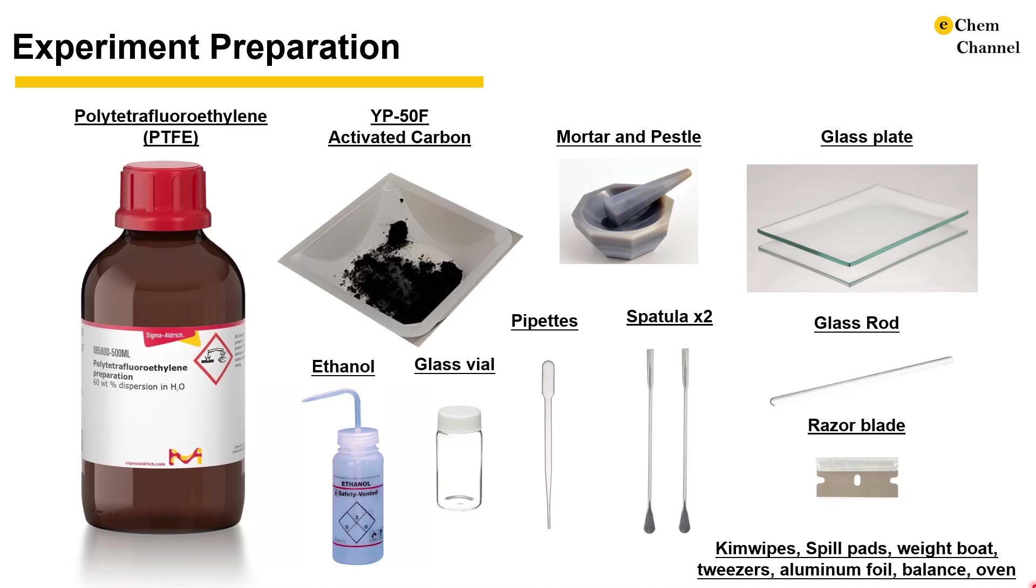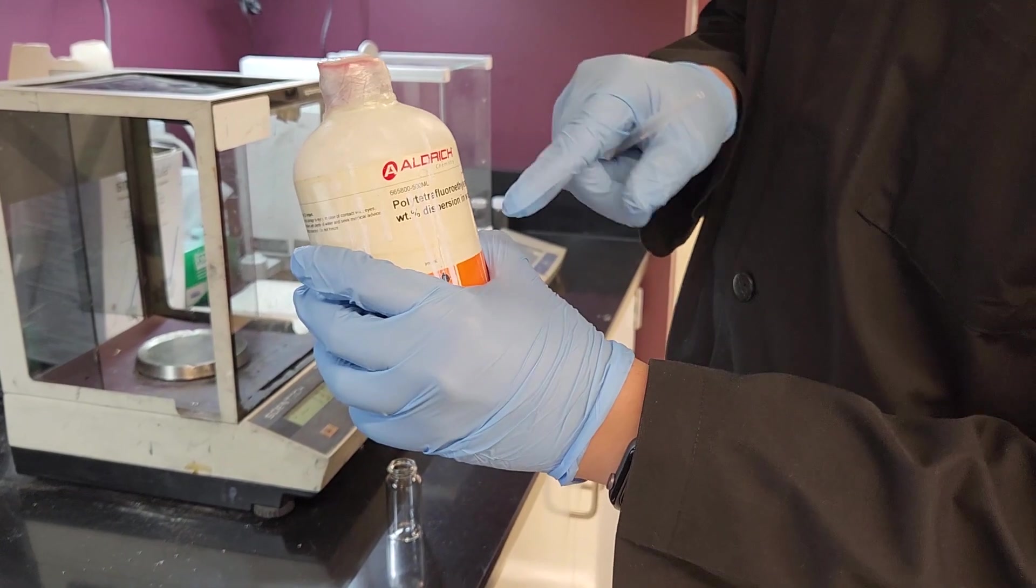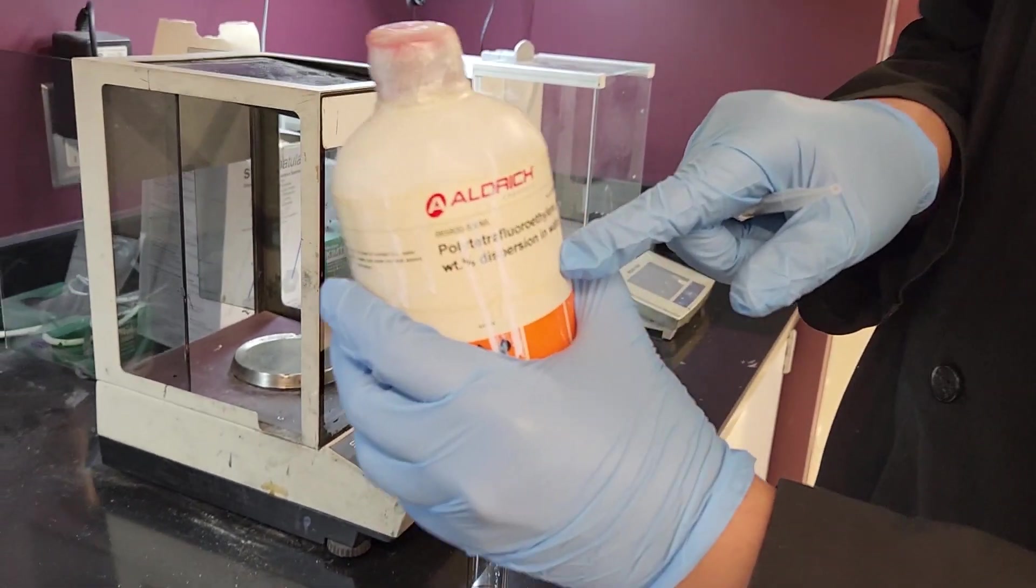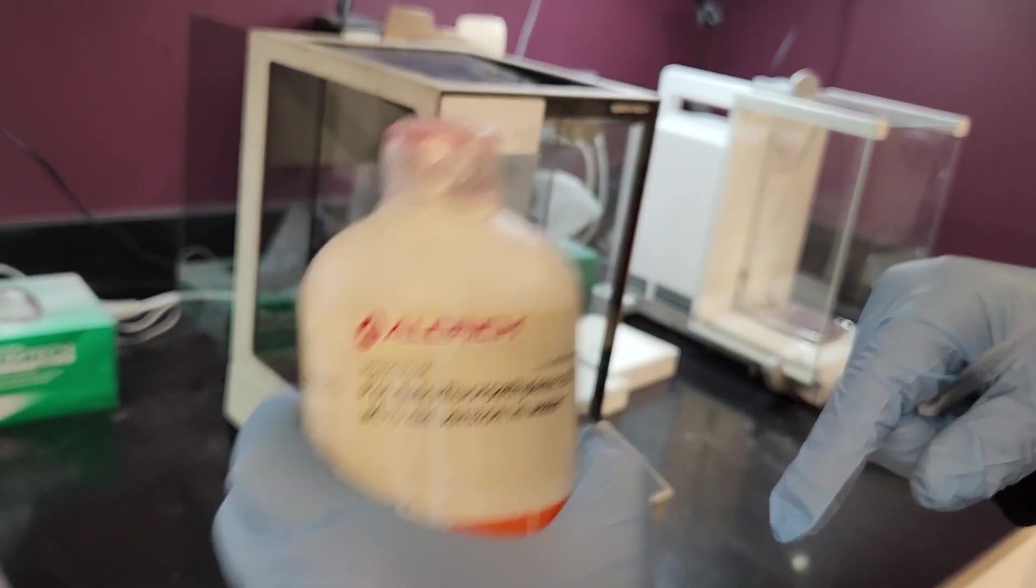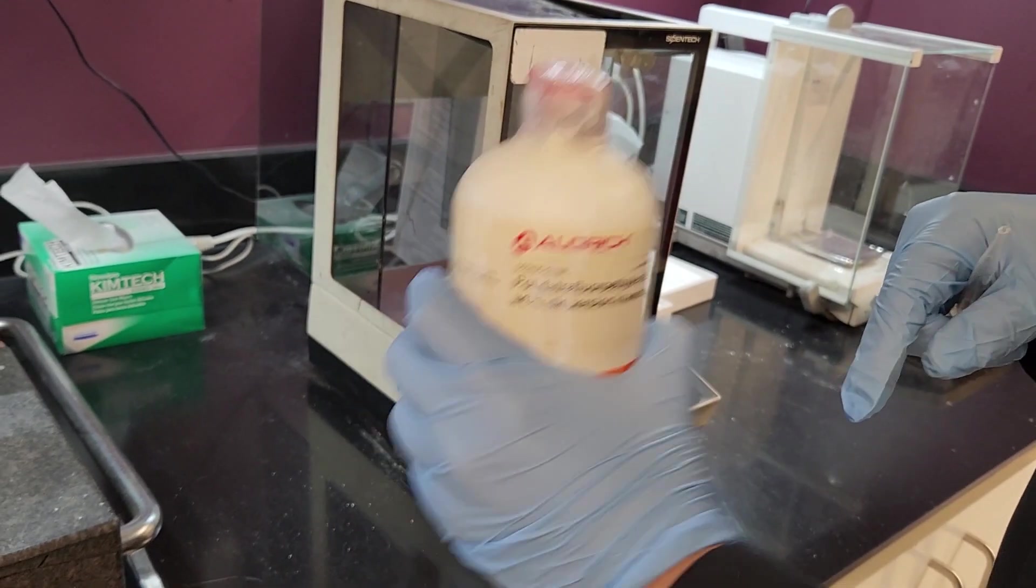The goal here was to make a 0.5g freestanding film. After allocating our accessories and equipment, we first need to weigh the chemicals. We will measure PTFE first because we are using plastic pipettes and only have rough mass control with the number of droplets added.